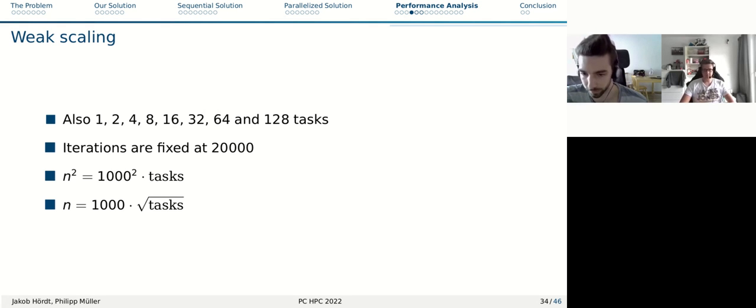For weak scaling, I'm passing it back to Jakob. Weak scaling involves increasing the problem size while simultaneously increasing the task size. We do this with this range of tasks. And we decided that it was best to fix the iteration count at 20,000 in this case, because we have an algorithm that doesn't just depend linearly on the grid size, but n to the third power. That's why we fix the iterations at 20,000 because it's much fairer and gives us results that are easier to interpret.